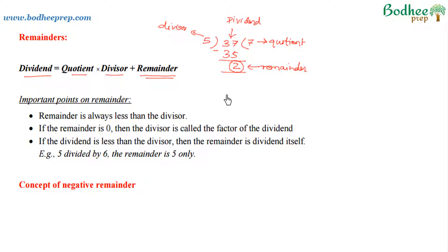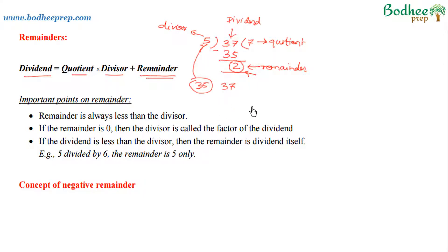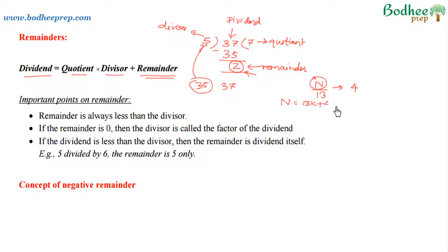Now let us analyze the concept of remainders in detail. When 37 is divided by 5, the remainder is 2. That means 37 is 2 more than 35, which is a multiple of 5. So for example, if a number n is divided by 13 and we get the remainder as 4, then we can say that n is 4 more than some multiple of 13. This is another way of framing this relation.